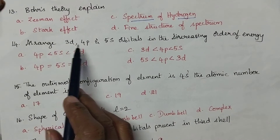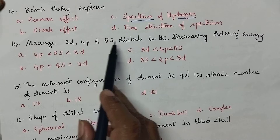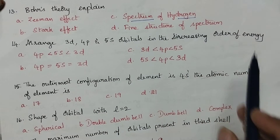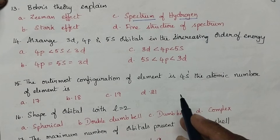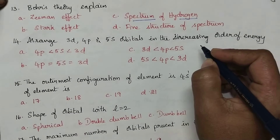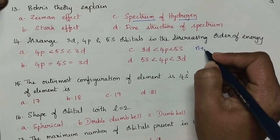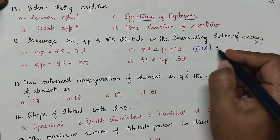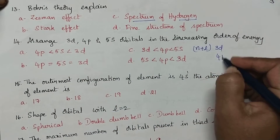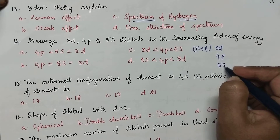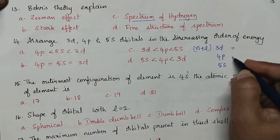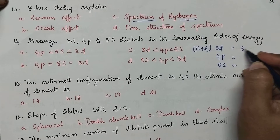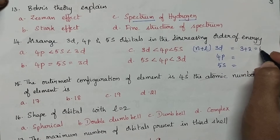Arrange 3d, 4p and 5s orbitals in the increasing order of energy. The energy of the orbitals can be calculated by using the n plus l value. For the given three orbitals 3d, 4p and 5s, let us calculate the n plus l value. For 3d orbital, it is 3 plus 2 equal to 5.